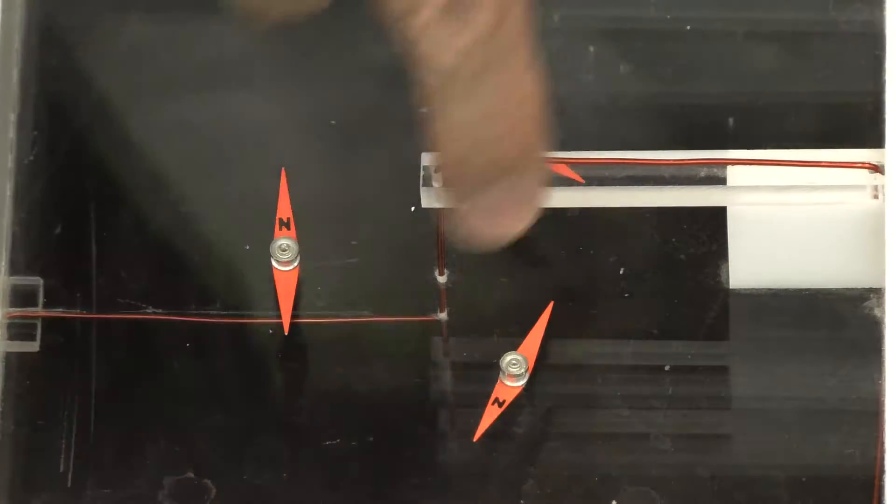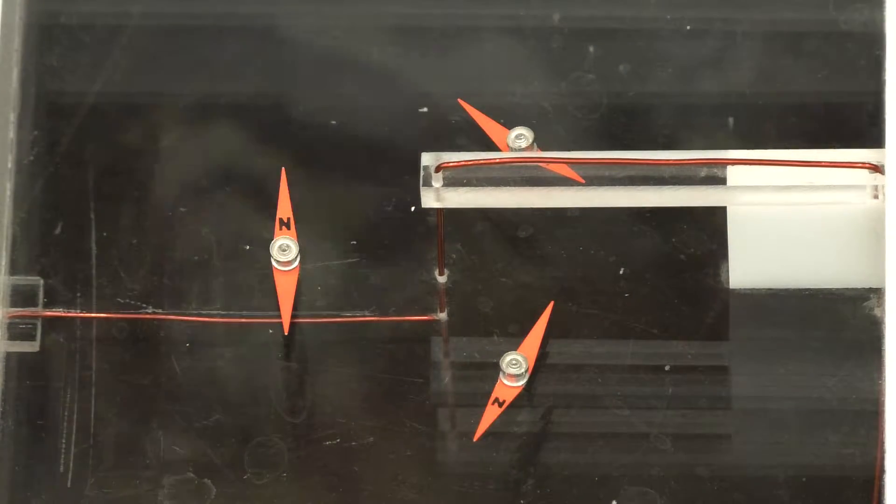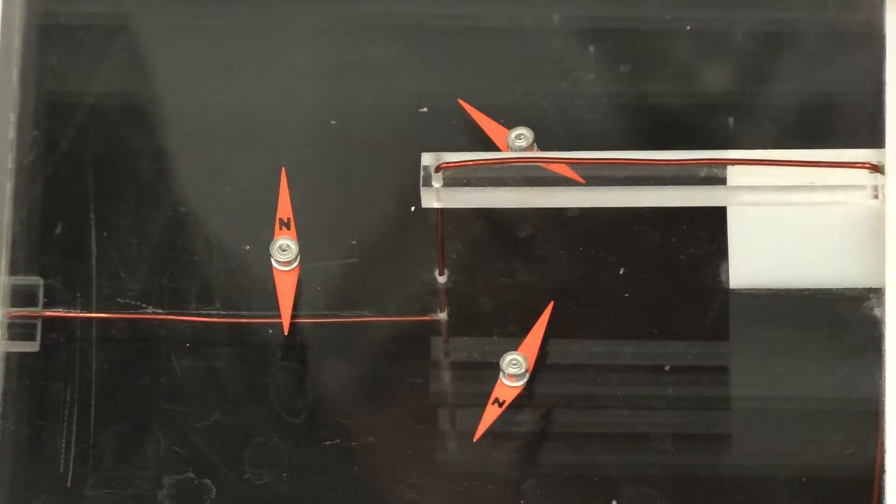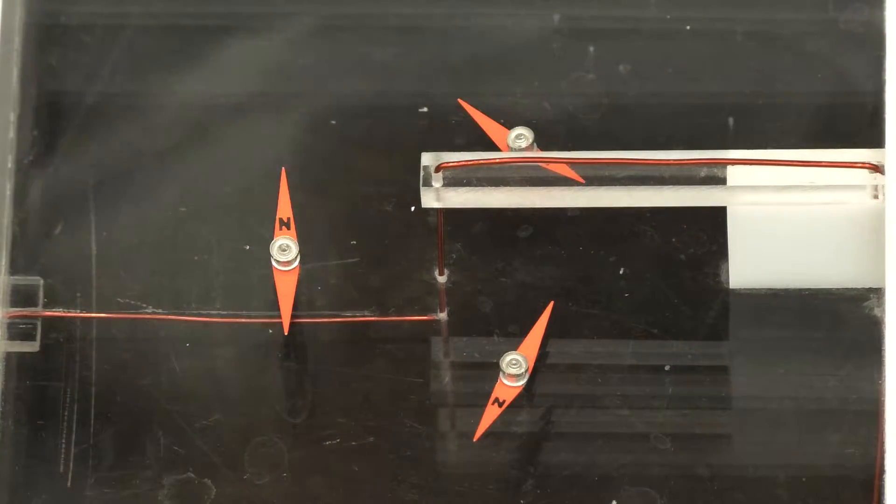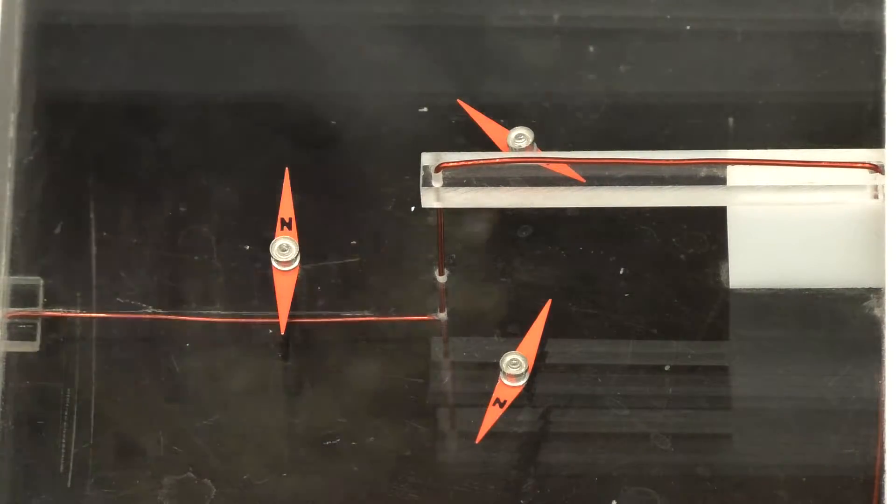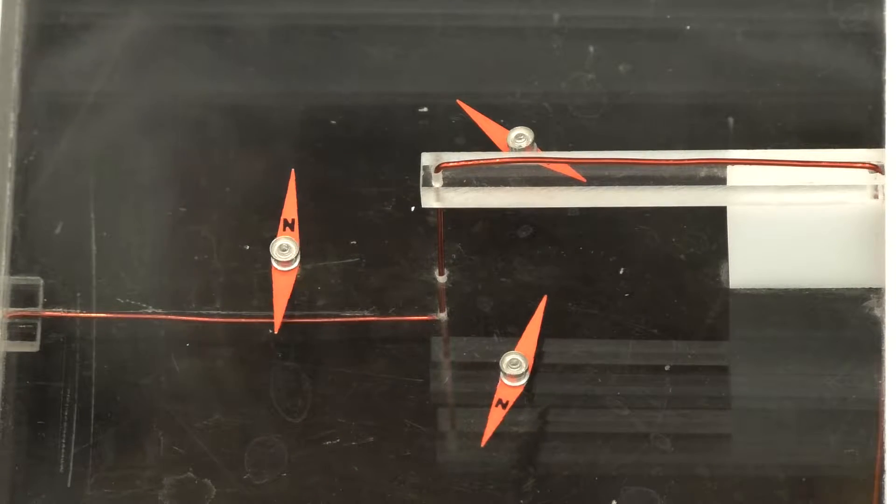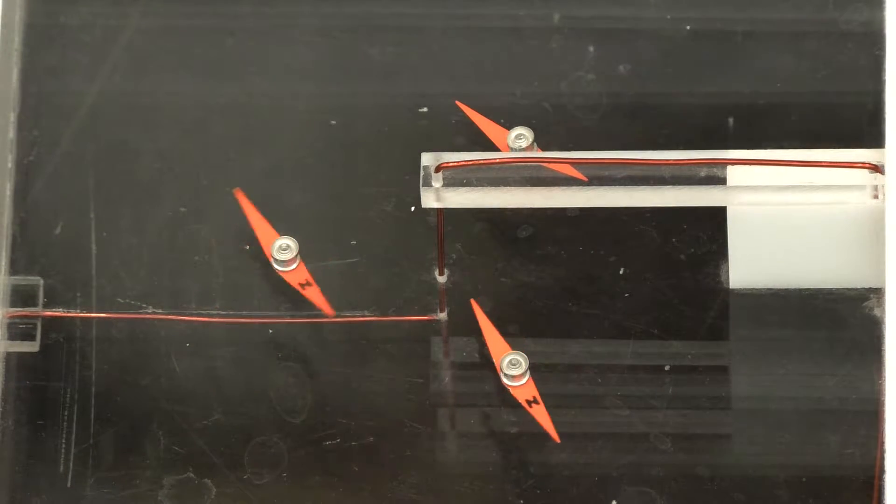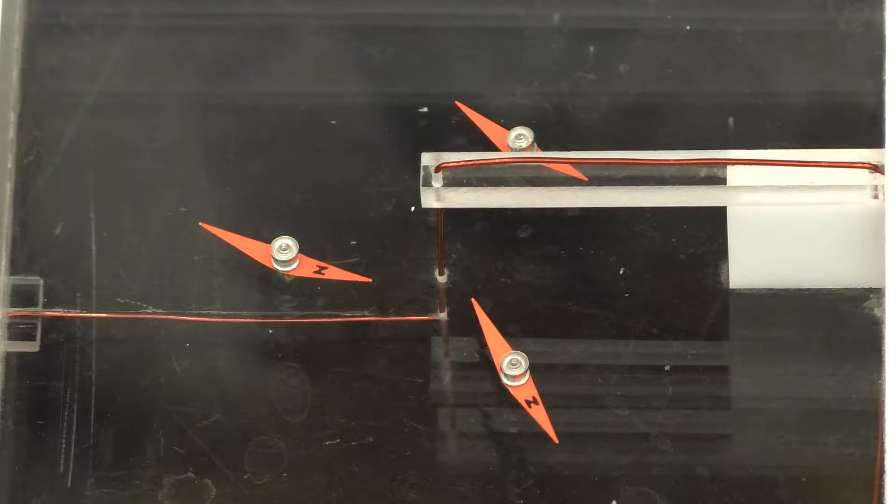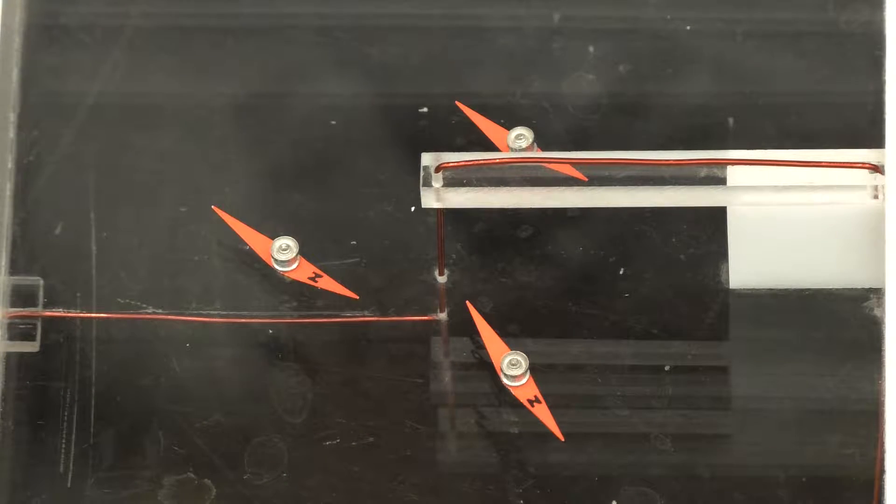But basically we see here that we've got a movement in the direction. We have competition between the Earth's magnetic field and the circular magnetic field. But we've got a movement in the direction of a magnetic field produced by this current-carrying wire. So I just turned the power off and the magnets are again pointing in the direction of the Earth's magnetic field.